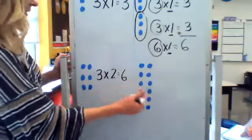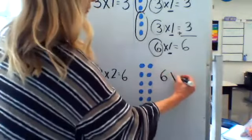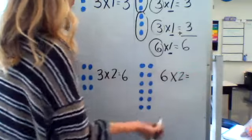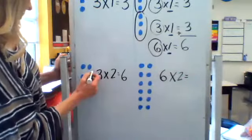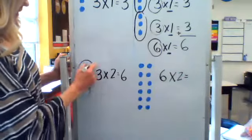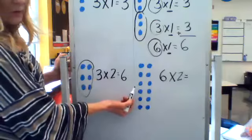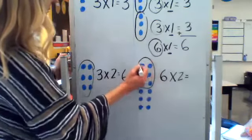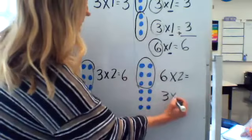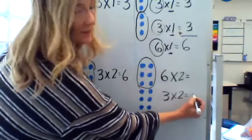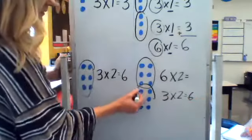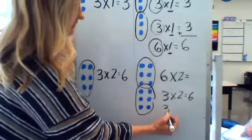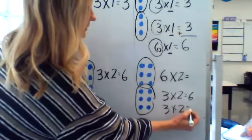Now over here I have six groups of two, six groups of two. And let's see, there's my three groups of two right there. So when I have six groups of two, that's like having three groups of two, which I know is six, plus another three groups of two, which would be another six.